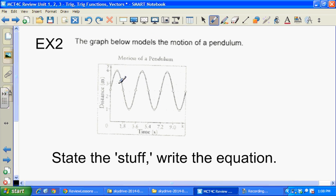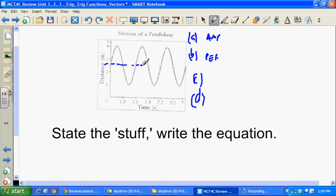The next type is an application question where we're given the motion of a pendulum. This was actually one of our projects, wasn't it? The motion of a pendulum. State the stuff, write the equation. Well, the stuff is all that stuff that we had before, the period. And the period will allow us to get the B value. It's kind of like these things are what we want to find in this equation. And notice, is this a sine curve or a coast curve? Well, there's kind of the middle point, and it starts at its middle point. This is a sine curve, so it's going to look like this.